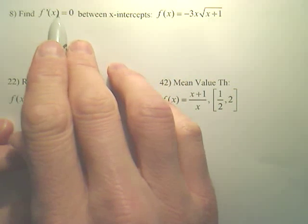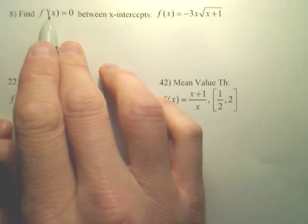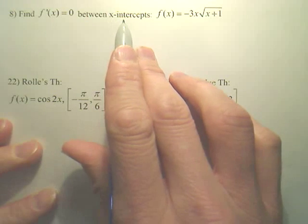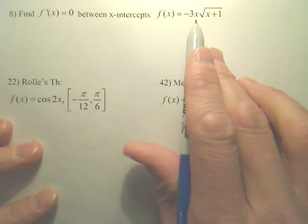And by doing that, you should notice that where the derivative equals zero should be between the two x-intercepts, as long as this is continuous and differentiable on the interval.